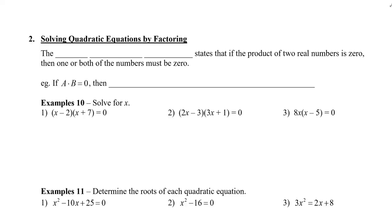In this video, you're going to learn how to solve quadratic equations by factoring. In order to do this, you need to use the zero product property, which states that if the product of two real numbers is zero, then one or both of the numbers must be zero.